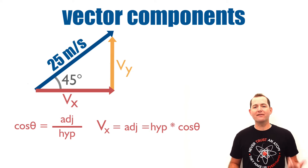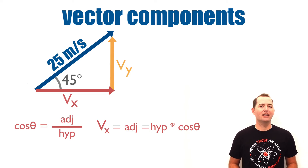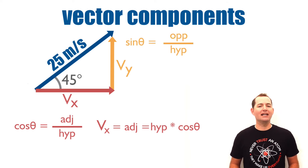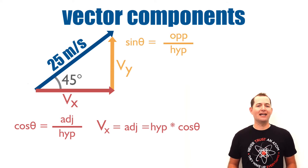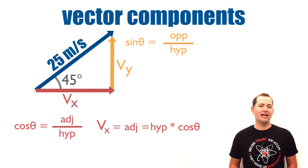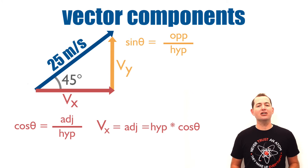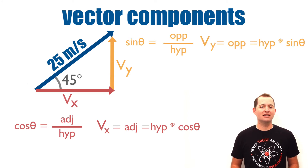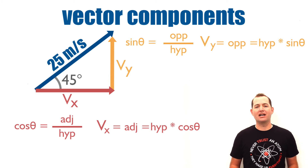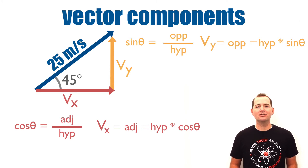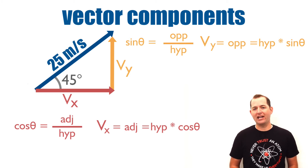We can do a very similar step to determine the component of our velocity in the y direction. We know that the sine of theta is equal to the side opposite our angle divided by the hypotenuse. We can rearrange this equation — the y component of our velocity, or the side opposite our angle, is equal to the hypotenuse times the sine of theta, or the sine of our angle.